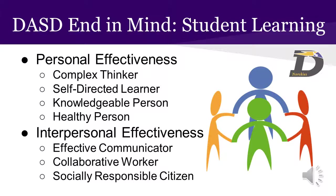There are two types of learning goals that the school community identified — personal and interpersonal. Under personal effectiveness, we have complex thinker, self-directed learner, knowledgeable person, and healthy person. Under interpersonal effectiveness, we have effective communicator, collaborative worker, and socially responsible citizen. You can find more descriptors for each of the learning goals on our website.